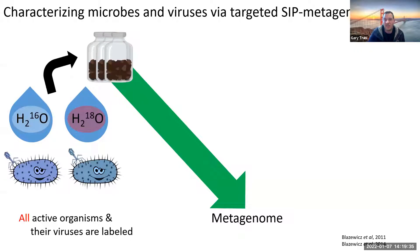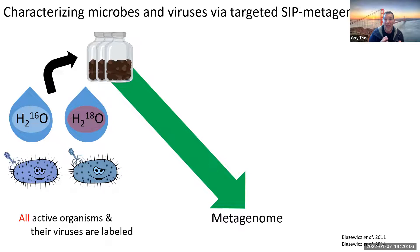To get around this, we use stable isotope probing as one way. This first example uses oxygen - we have regular water which is typically H2-16O, but we can make heavy water which is H2-18O, not to be confused with deuterium. We're specifically using 18O. When we add this to an environment like soil, water is a universal substrate, so anything that's active is going to use this water and become labeled with 18O within its DNA, so we can detect everything that's active.